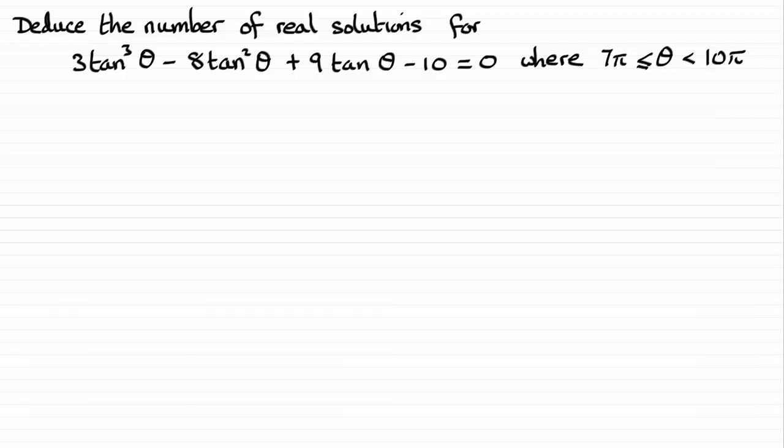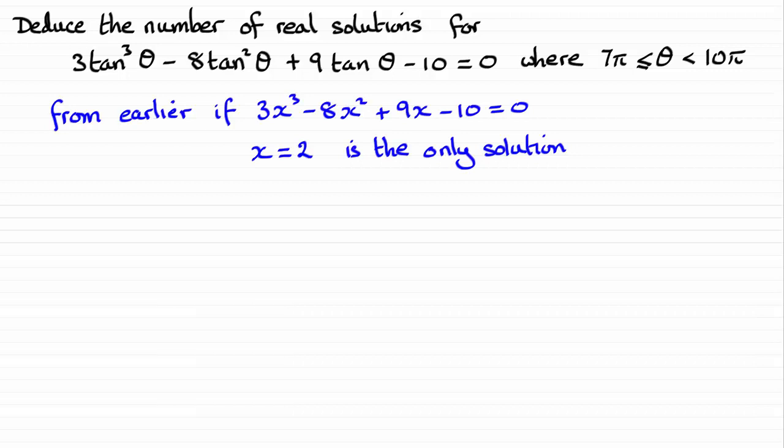So from an earlier part, we had this equation here and we found out that there was only one solution to it. That was because there was that factor x minus 2 equals 0 leads to x equals 2. The other factor, the quadratic factor, the discriminant was less than 0 so there was no solution. So all I need to do now when I look at comparing these two equations, you can see that x is being replaced with tan θ.